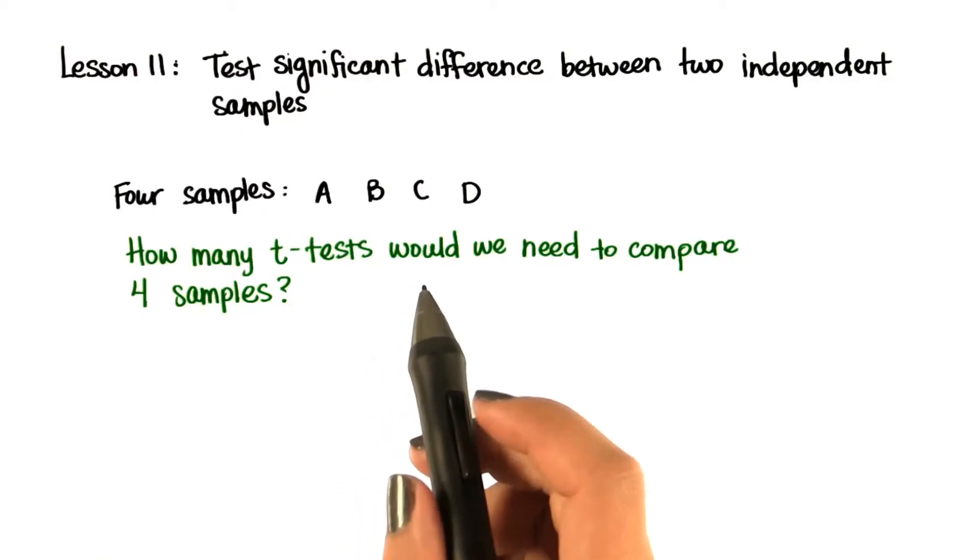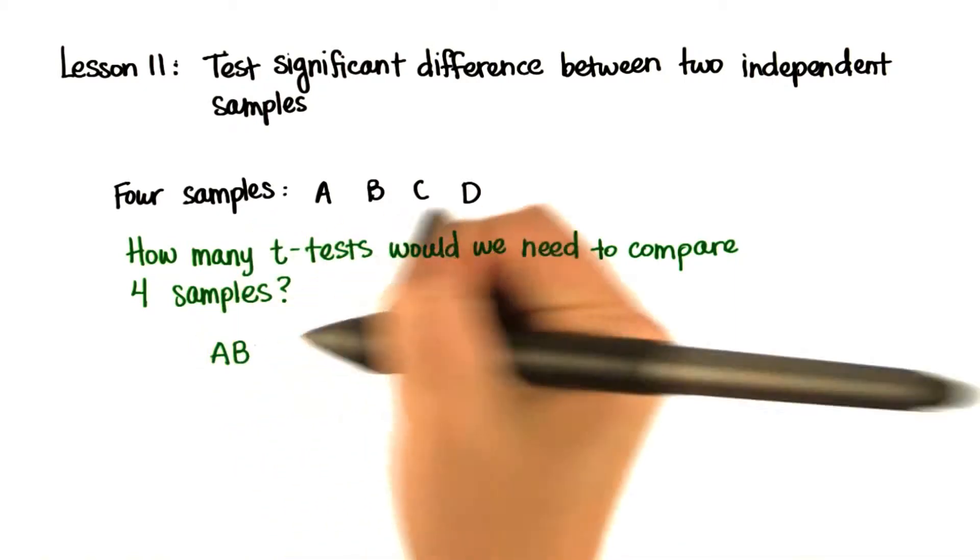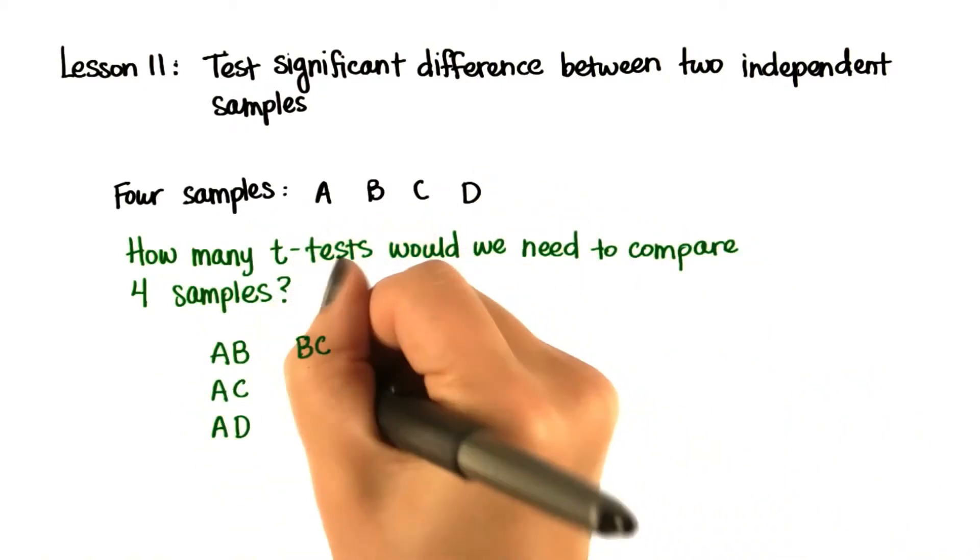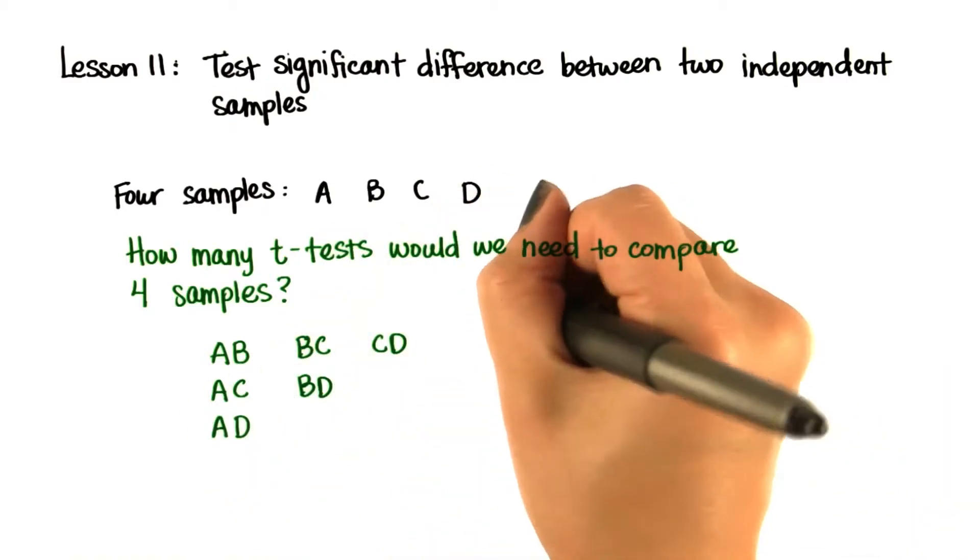You can figure out how many t-tests we need by brute force. We would need one between A and B, A and C, A and D, B and C, etc. And you see that we would need six t-tests.